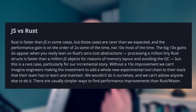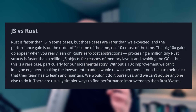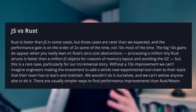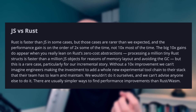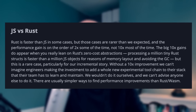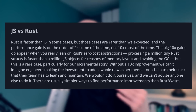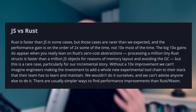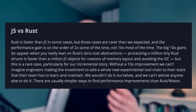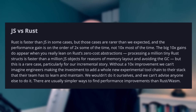So they say: Rust is faster than JavaScript in some cases, but those cases are rarer than we expected. The performance gain is on the order of 2x some of the time, not 10x most of the time. Without a 10x improvement, we can't imagine engineers making the investment to add a whole new experimental toolchain to their stack.